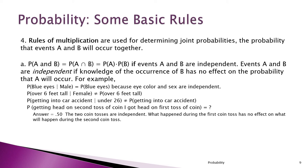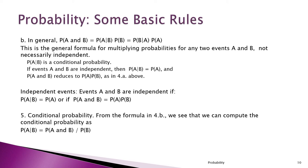Here's the general formula for multiplication. If we don't know that events A and B are independent, or know they're not, we can compute the joint probability of A and B by taking the probability of A given B multiplied by the probability of B. You always multiply by the event after the 'given.' We could also compute it as the probability of B given A multiplied by the probability of A.